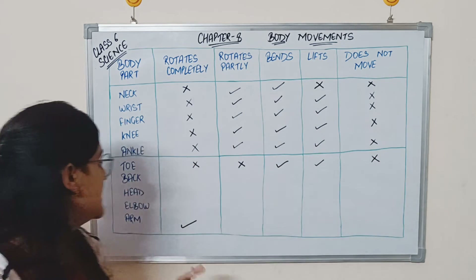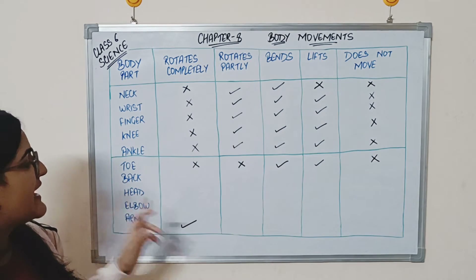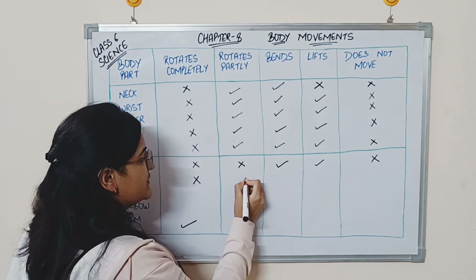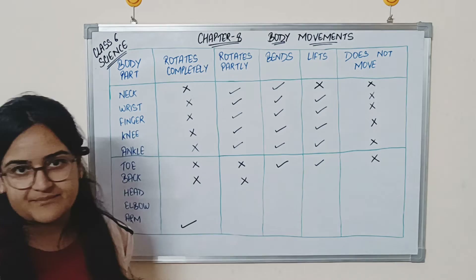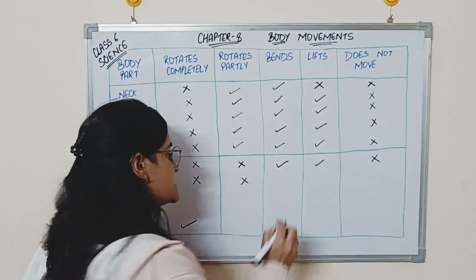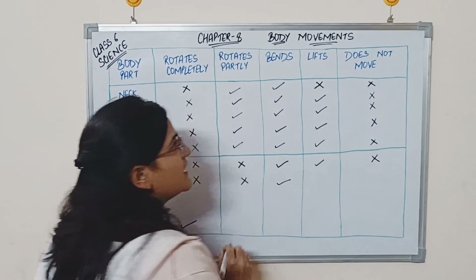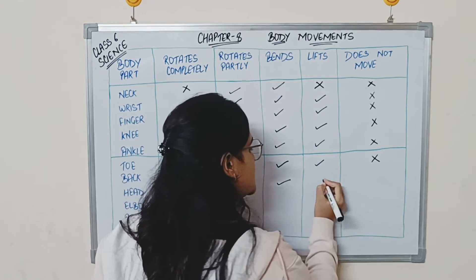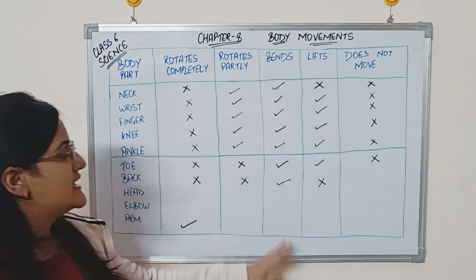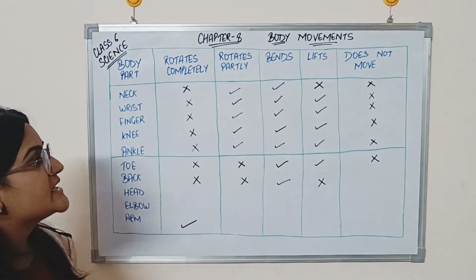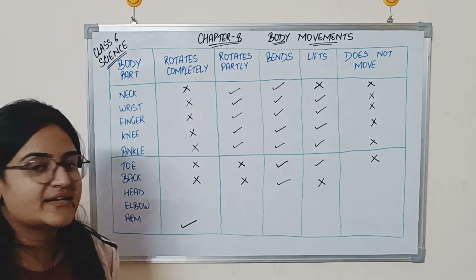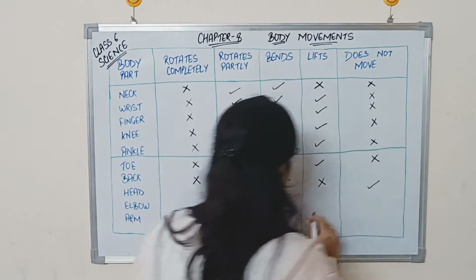Next is the back. The back cannot rotate completely, and it cannot rotate partly either. It does bend — forward, backward, and sidewards. You cannot lift your back. So it will come under 'bends' only.